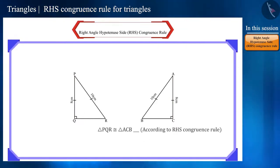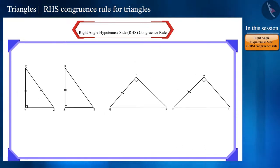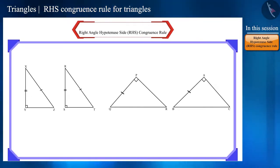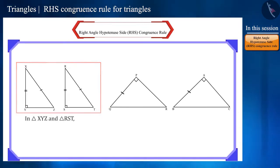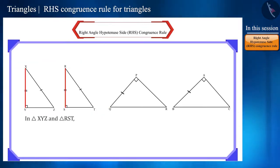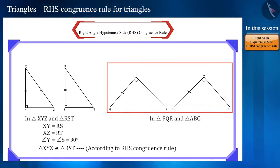A few pairs of triangles are displayed on the screen. Which of the following pairs of triangles are congruent according to the RHS congruence rule? In the first pair, both triangles are similar as they have one equal side and equal hypotenuse. Therefore they are congruent according to the RHS congruence rule.